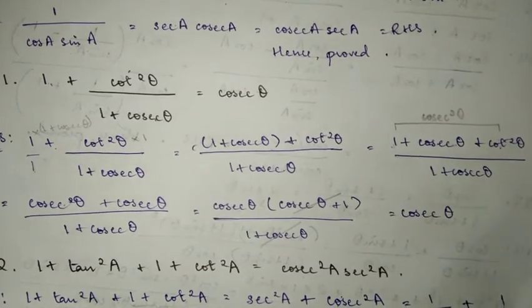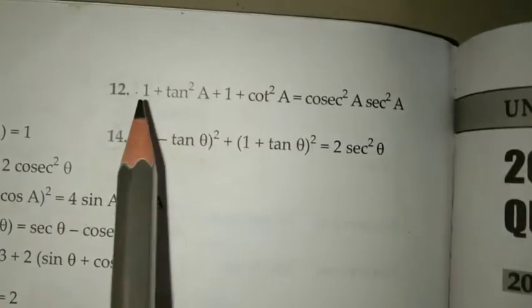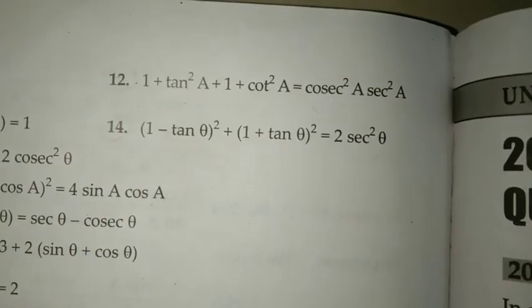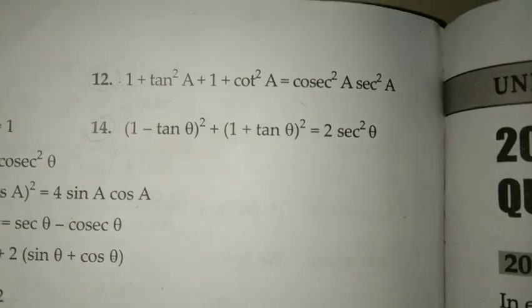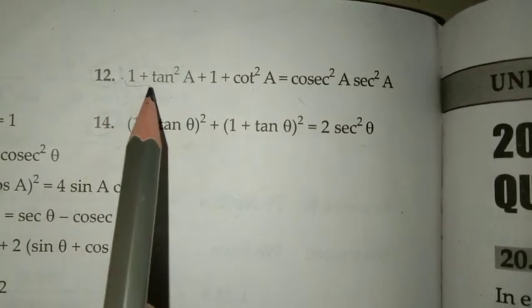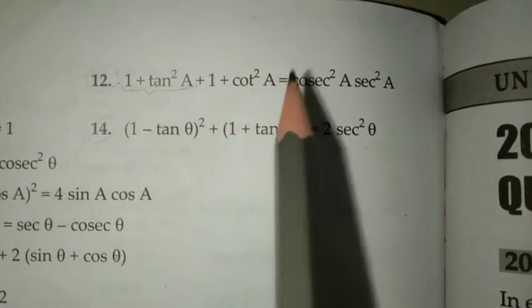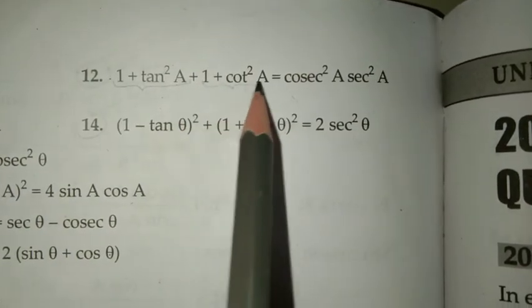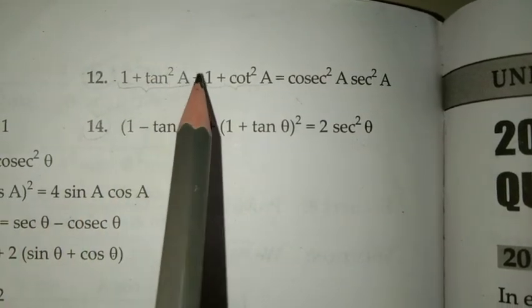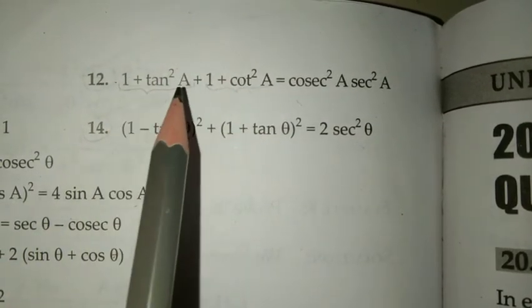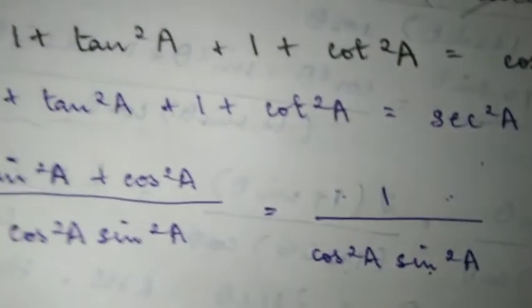Now, question number 12: direct substitution is the approach. The formulas are: 1 plus tan²theta equals sec²theta, and 1 plus cot²theta equals cosec²theta. So 1 plus tan² becomes sec²A, and 1 plus cot² becomes cosec²A. We'll substitute directly and solve.